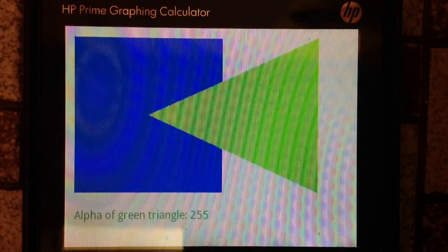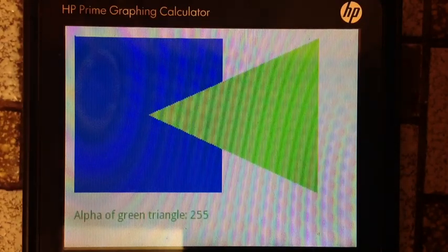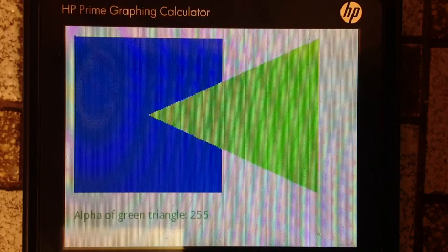A blue square and a green triangle. The green triangle is going to have the alpha constant designated. Here, the alpha is at 255 and the green triangle is solid.